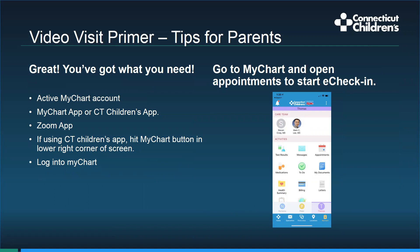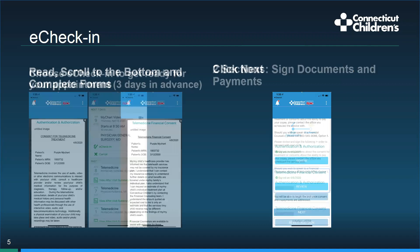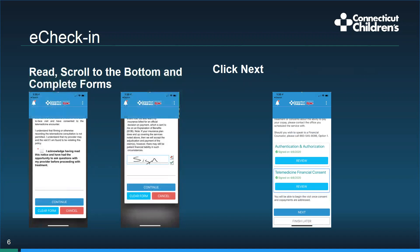Now to get things started with the next step, e-check-in, you will want to access your MyChart account and tap on the appointments icon. Just like an in-person appointment, there are some things that you can do to check in for your appointment. This can be done three days in advance. There are two sections to e-check-in: documents and payments. Click on e-check-in and this will take you to the documents page. There are several documents — please read them, scrolling to the bottom, and complete the forms either by checking the box or signing the form. When you are done, tap continue. You may have to scroll down and tap continue a second time, but when you are done with the forms, you'll be able to tap next.